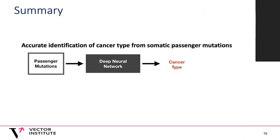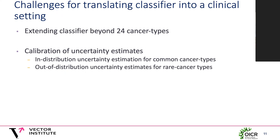To summarize, I've presented a deep neural network trained primarily on information from passenger mutations that can accurately discriminate between 24 common cancer types. The model has immediate clinical applicability in identifying primary tumor site for carcinomas of unknown primary, and we are currently exploring different avenues for testing on data in the clinic. Some additional work includes extending the model to greater than 24 cancer types, and work on providing calibrated uncertainty estimates so that in a clinical setting people can know exactly how reliable the classifier's predictions are, enabling automatic out-of-distribution detection.